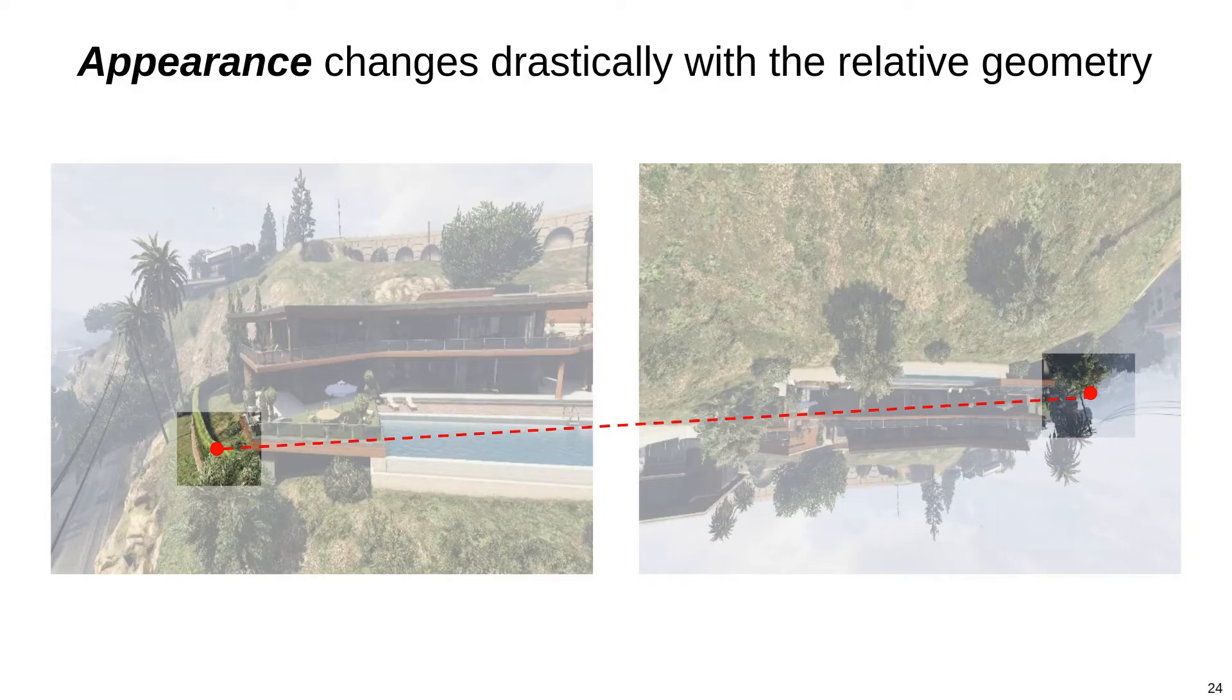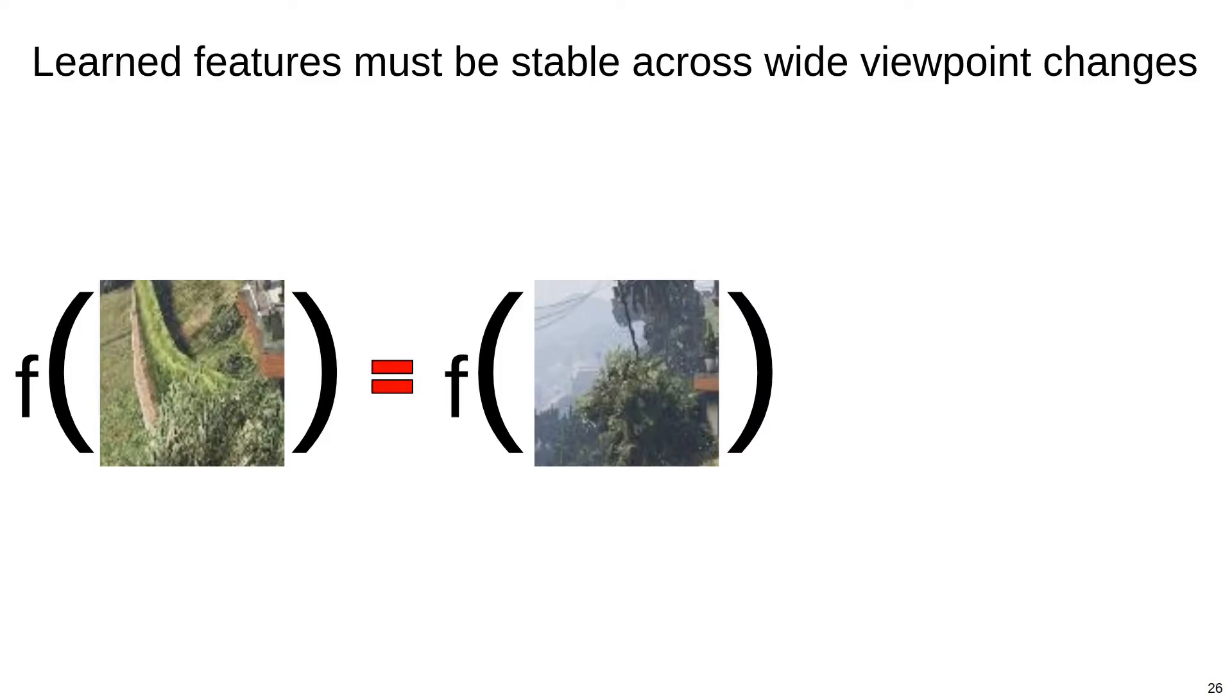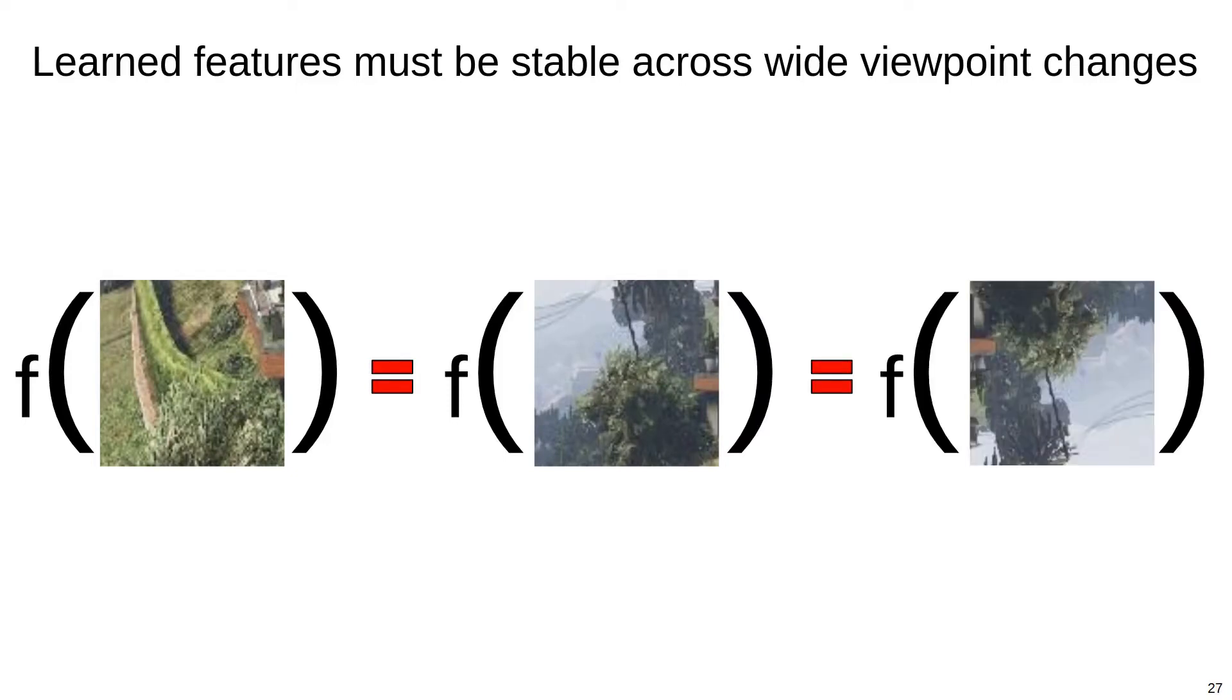The local patches are now even more different. By not considering the relative geometry between the cameras, the extracted features must implicitly compensate for all possible arrangements of the cameras. The features for the first patch of pixels must be the same as for the second patch, which must be the same as the last patch.